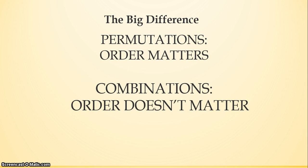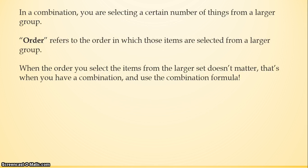It's a big difference. For a permutation, the order in which you select items matters. But for a combination — which is what we're going to be talking about in today's video — the order in which you select items from the larger group doesn't matter. I know that's confusing, so I'm going to give you an example.